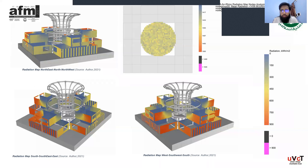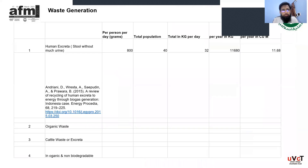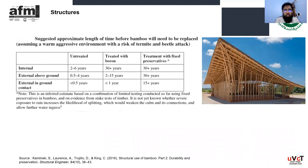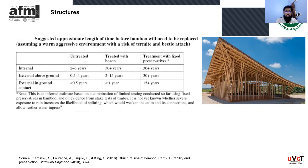Waste generation is approximately 11.68 cubic meters per year. For structural farming, bamboo treatment is very necessary to extend building life. Boron treatment of internal bamboos allows them to last more than 30 years. Fixed preservative treatments can also be applied, increasing the life of external bamboos, whether in-ground or above-ground.